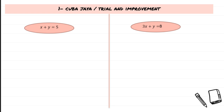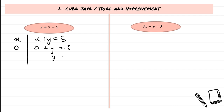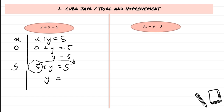Trial and improvement method. Unlike 6.1 where we had one variable, here we have two. Take the first example: x + y = 5. If we let x = 0, then 0 + y = 5, so y = 5. If we let x = 5, then 5 + y = 5, so y = 5 − 5, which gives y = 0.